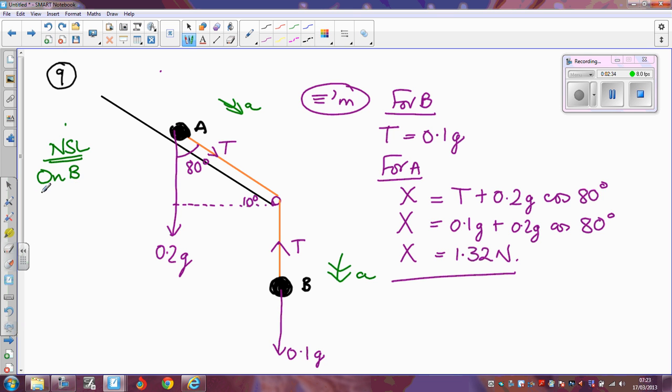So now I'm going to use Newton's second law on each of those. So if we first of all look at B, so for Newton's second law, acting downwards, you've got that 0.1g, but the tension is acting upwards, so the resultant force in a downward direction is 0.1g minus t, and that's going to equal the mass, which is 0.1 times the acceleration. Now, if we do the same thing on A, so there for B, I use Newton's second law downwards, for A, I'm going to use Newton's second law down the slope.